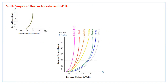Based on the supply voltage, we get different colors. As the applied voltage increases, the current also increases. This is about the voltage and current characteristics of the LED.